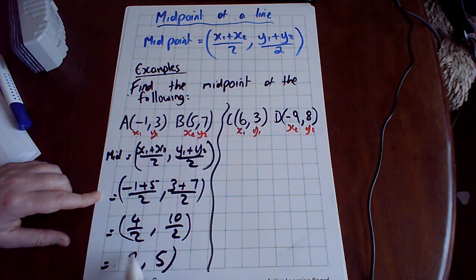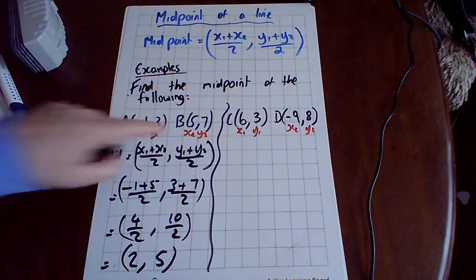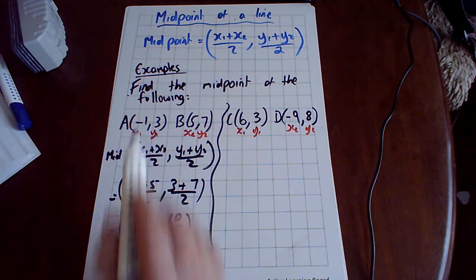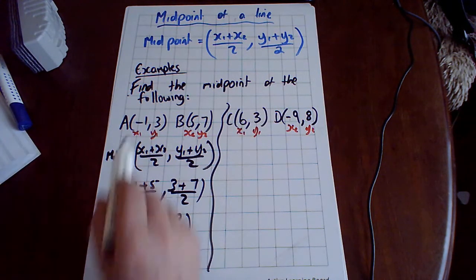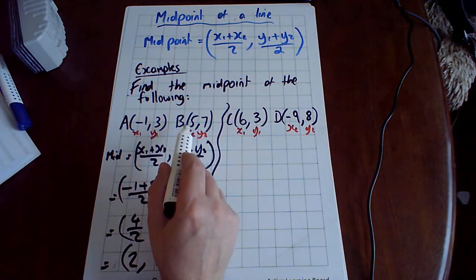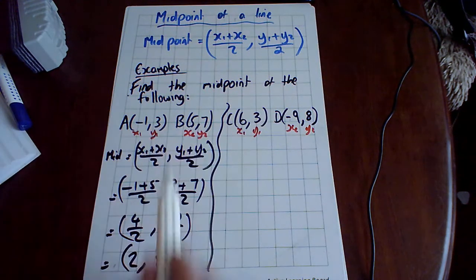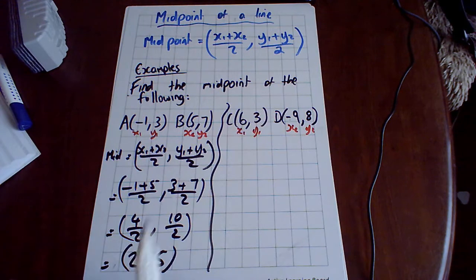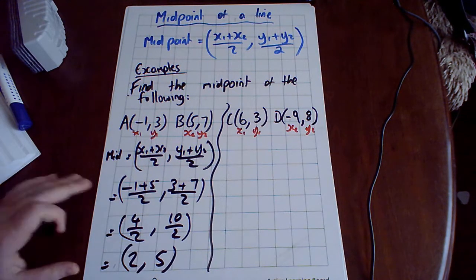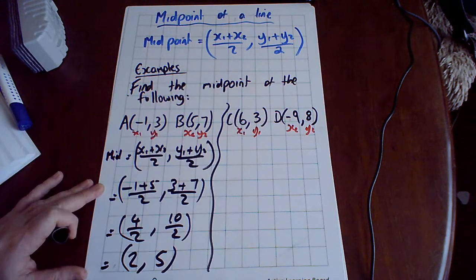That simplifies down to (2, 5). So the midpoint of this line is (2, 5). Now I think most people would have been able to see that the middle of minus 1 and 5 is 2, and the middle of 3 and 7 is 5. But when you get to decimal places or negative numbers, it's really advised to use the formula.